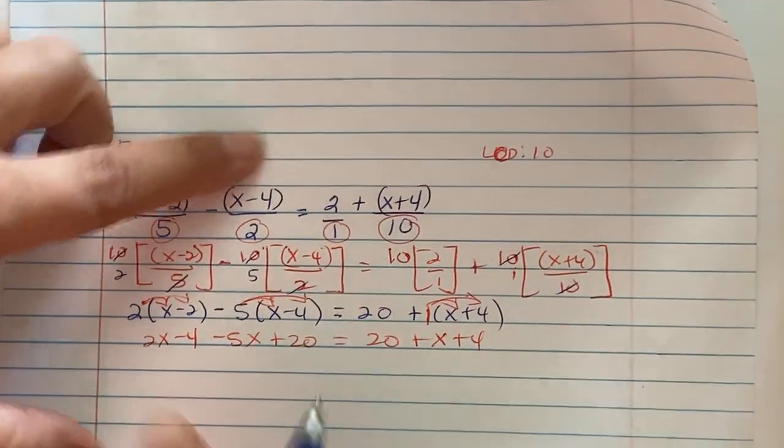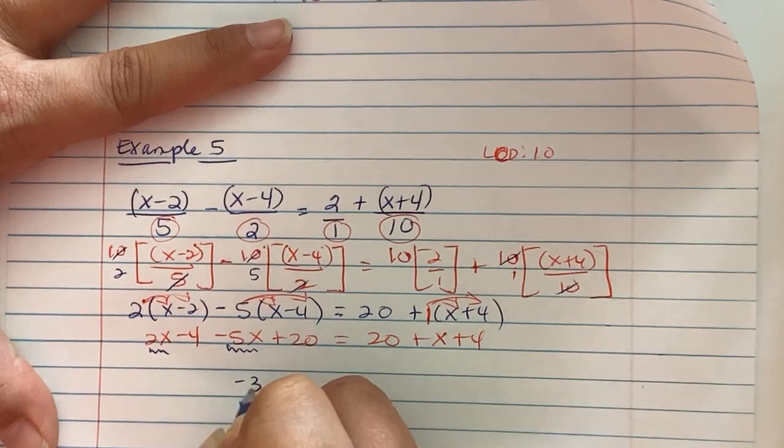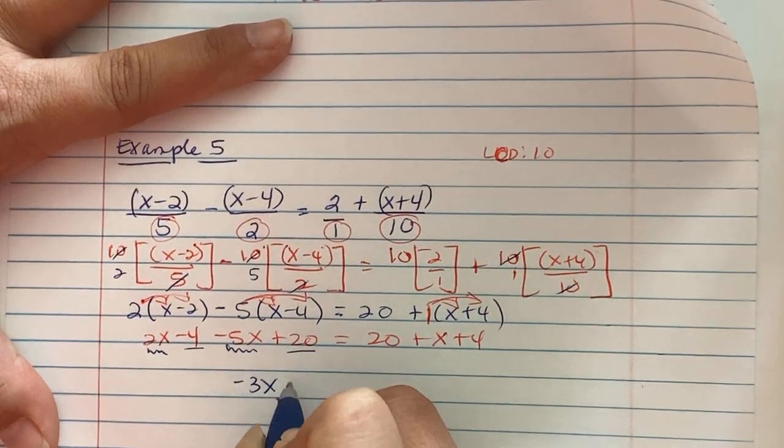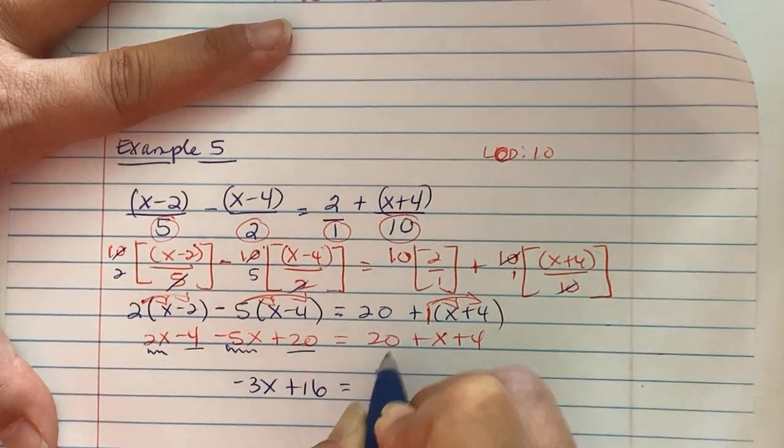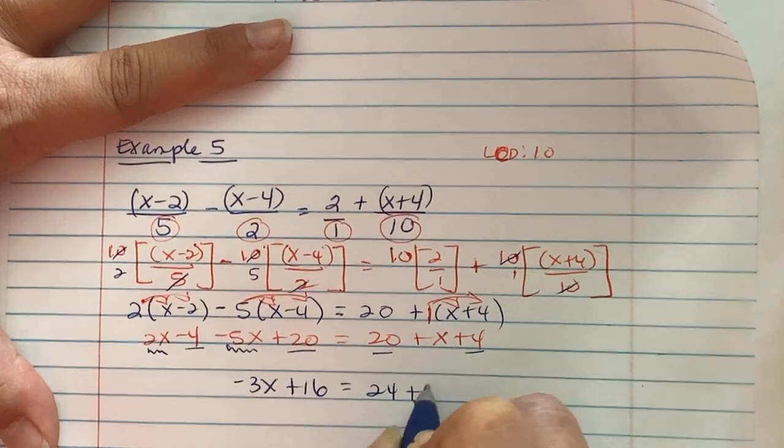Combine like terms on the left and right. So we see 2x minus 5x is a negative 3x. Short 4, found 20, I have 16. I have 20, I gained 4, I have 24 plus an x.